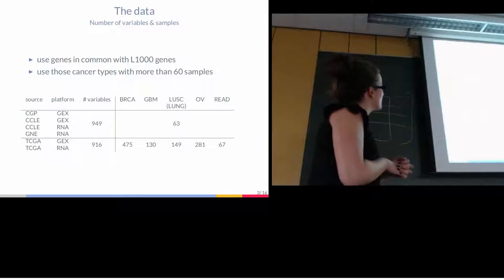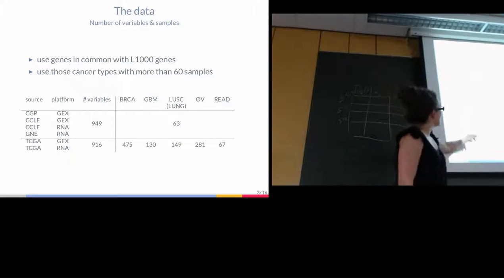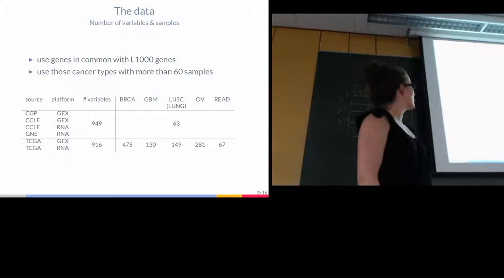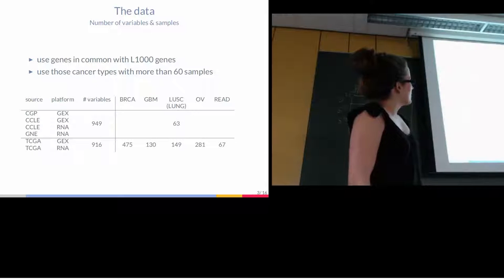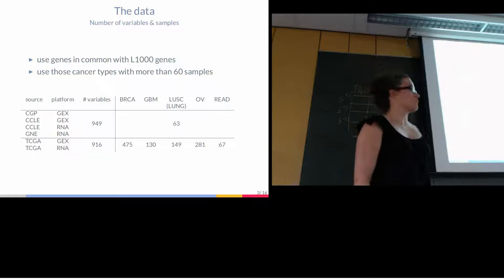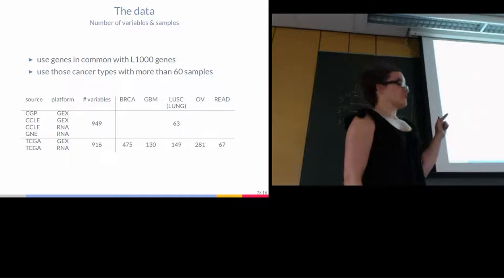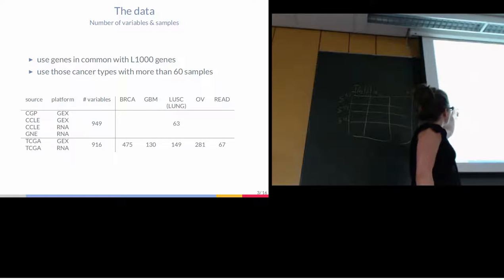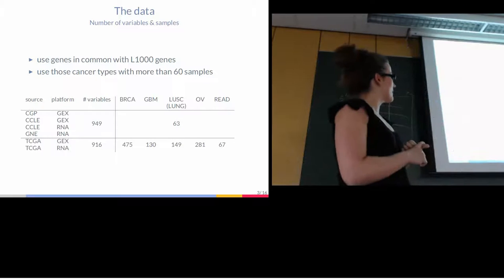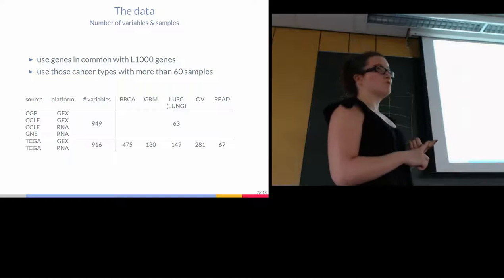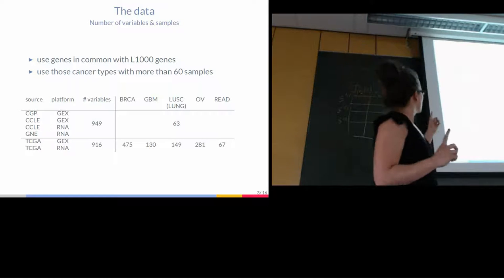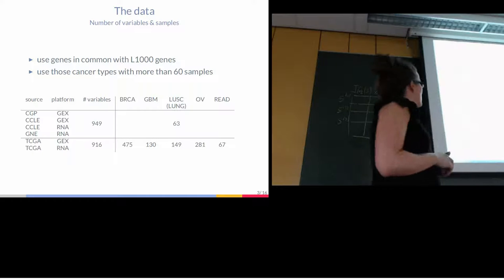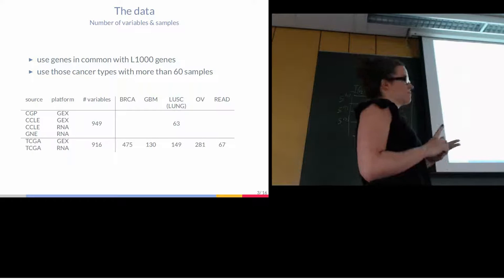So here you see the data we used. We have the TCGA data with 916 variables in common with the L1000 genes and five different cancer types ranging from 67 samples in READ, colorectal cancer, to 475 in BRCA breast cancer. Those are matched samples. And then in these four cancer cell line datasets, we have matched samples, only 63 samples, but they are all matched over these four datasets to gene expression, to RNA, twice the same lab. So CCLE provided both microarray and RNA, and then we have CGP and GME.